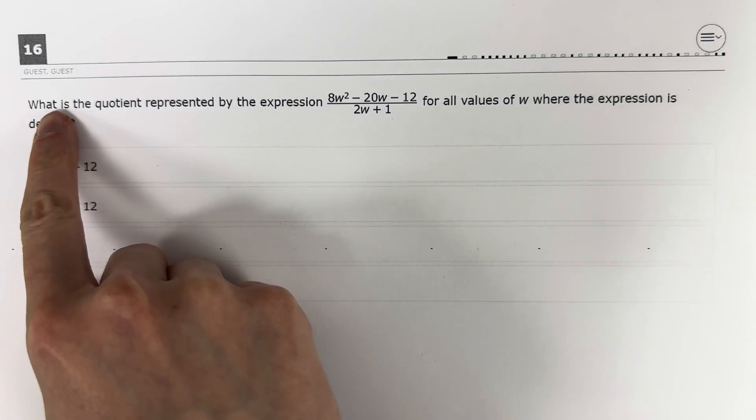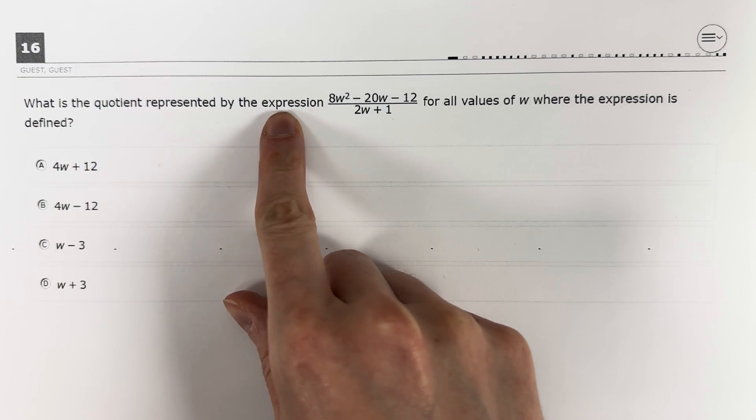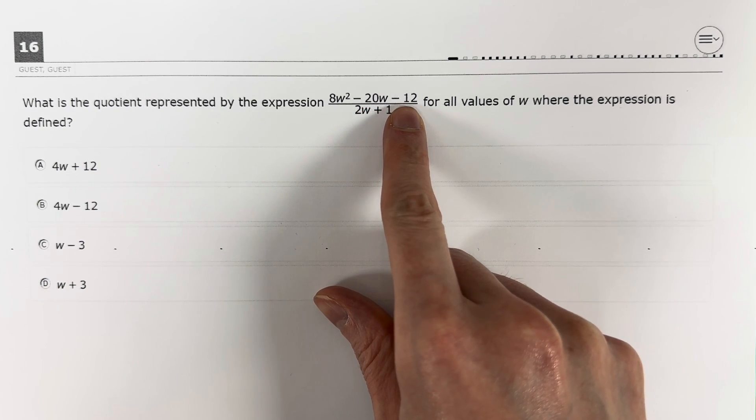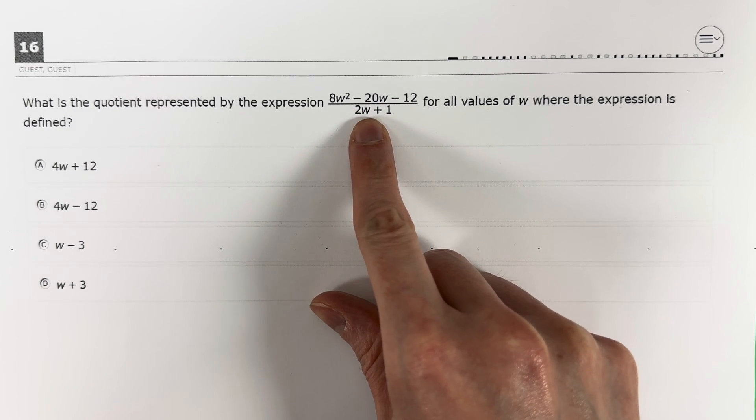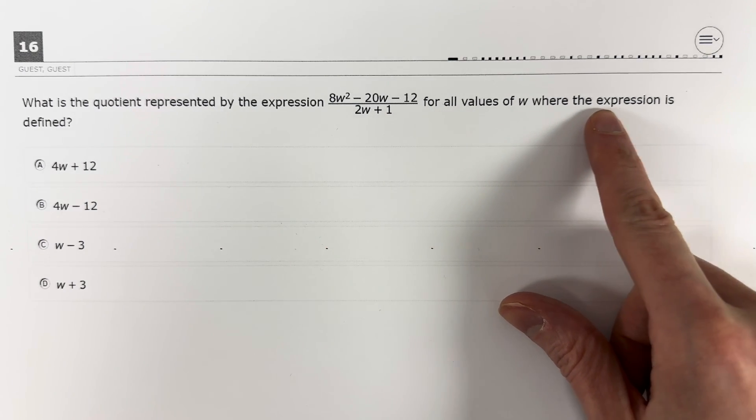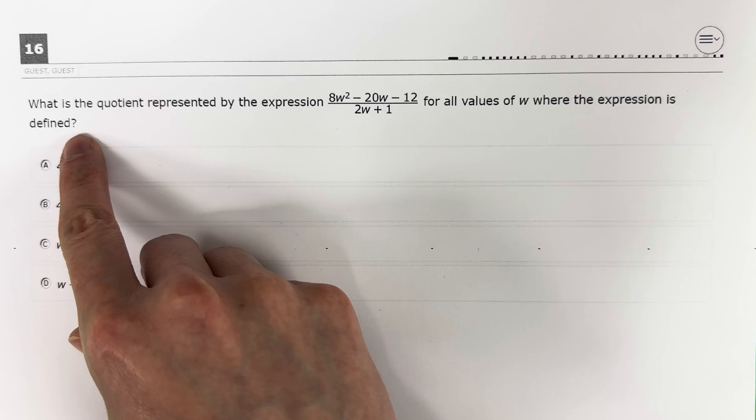Question 16. What is the quotient represented by the expression 8w squared minus 20w minus 12, all divided by 2w plus 1, for all values of w where the expression is defined?